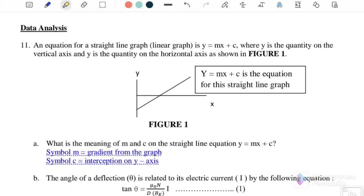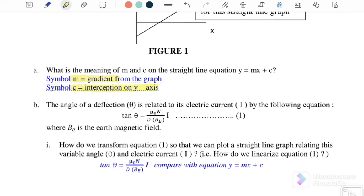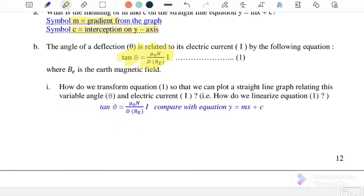Data analysis: An equation for a straight line graph is y = mx + c, where y is the quantity on the vertical axis and x is the quantity on the horizontal axis. What is the meaning of m and c? m is the gradient, c is the y-intercept.